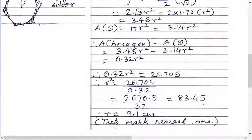R square equals to this division. Remove the points and you will get 26.705 upon 32. Divide this, you will get 83.45. Now divide this.